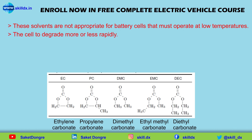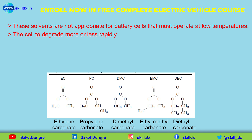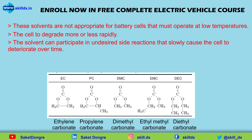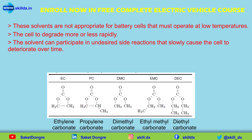Other solvents cause the cell to degrade more or less rapidly. Even though the solvent does not participate in the normal charging and discharging reactions, it can participate in undesired side reactions that slowly cause the cell to deteriorate over time. To get the most desirable properties — working well at cold and warm temperatures without degrading quickly — these solvents are often mixed together in different ratios in the electrolyte.